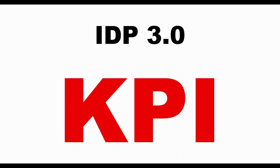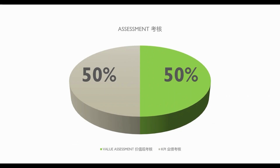Do you know that until today, Alibaba Group — a global company with over 100,000 staff — they are still applying KPI seriously? But their concept is a bit different from other companies. What we are introducing is value assessment plus KPI. Some of you may be confused: what is the difference between KPI and value assessment?